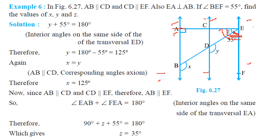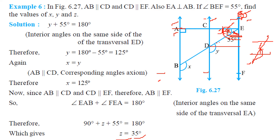Z equals 35 degrees. Now, this angle is equal to that angle due to the parallel lines. Drawing a parallel line through the point, Z equals 35 degrees by the corresponding angle property. Total angle Y is 90 plus 35 degrees, which gives us 125 degrees. So Y is 125 degrees.